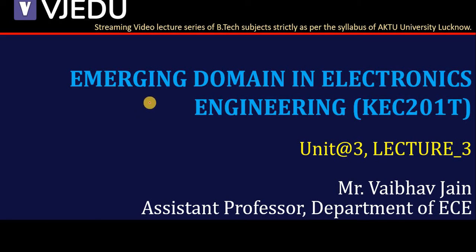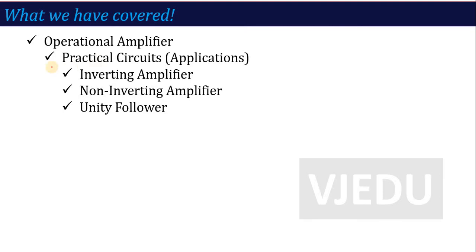Hello everyone, welcome to the video lecture series of Emerging Domain in Electronics Engineering. Subject code is KEC201T and here we are in lecture number 3 of unit number 3. In the previous lecture we started operational amplifier practical circuit applications, where we learned the fundamental of what type of output voltage is calculated — the output voltage and the respective voltage gain, that is the V0 by Vi concept.